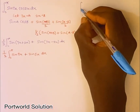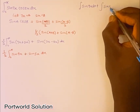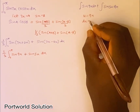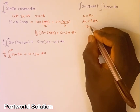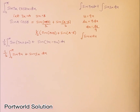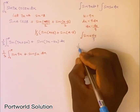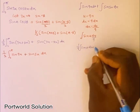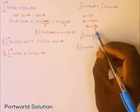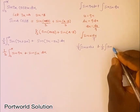I'm going to separate this into two integrals: the integral of sin(9x)dx plus the integral of sin(5x)dx. For sin(9x), I use the substitution u = 9x, so du = 9dx, meaning dx = du/9. This gives me (1/9)∫sin(u)du.